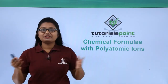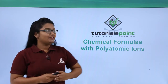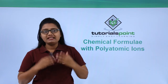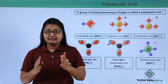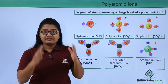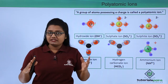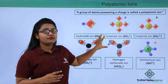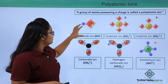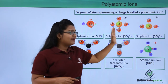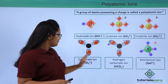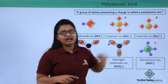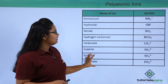Hello everyone, welcome to Tutorials Point. In this video we will be learning about writing a chemical formula which involves polyatomic ions. Polyatomic ions are a group of atoms possessing a charge — this charge can be positive or negative. Here I have shown a set of polyatomic ions: a hydroxide ion, a sulfate ion, a sulfite ion, a carbonate ion, a hydrogen carbonate ion, and an ammonium ion.